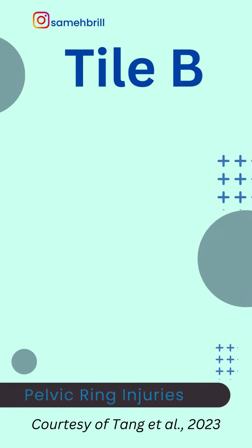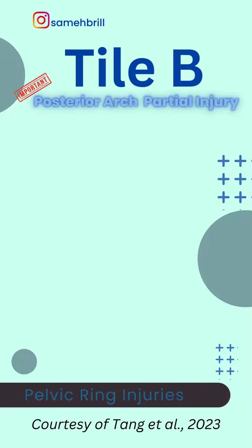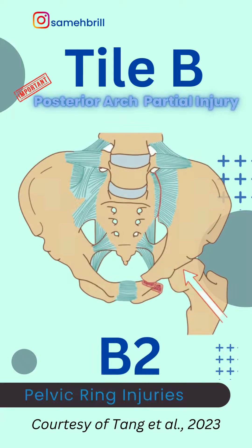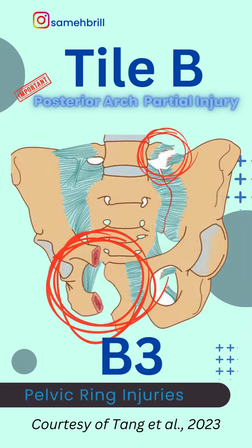As for Type B fractures, the posterior arch is partially injured. They can be open book injuries (B1), lateral compression injuries (B2), or bilateral in Tile B3.